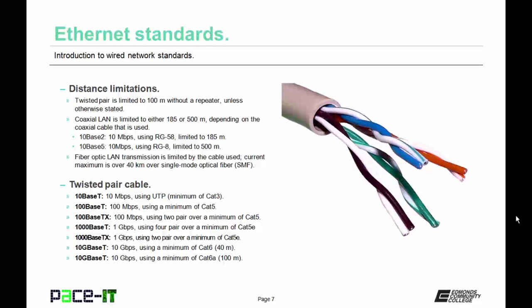Now let's talk about twisted pair cable standards. There's 10BaseT — that's 10 megabits per second using UTP over a minimum of CAT3 cable. Then there's 100BaseT at 100 megabits per second using a minimum of CAT5. You can also have 100BaseTX, which is 100 megabits per second using 2-pair over a minimum of CAT5. Then there's 1000BaseTX, which is 1 gigabit per second using 2-pair over a minimum of CAT5e cable.